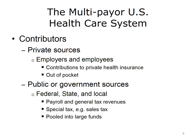Private sources include employers who purchase insurance policies or pay directly for health care expenditures through a self-insured plan. Individuals and families contribute through the employee portion of health insurance premiums and through out-of-pocket expenses. Federal, state, and local governments collect payroll taxes from employers and employees, and general tax revenue that are used to fund government-financed insurance. Occasionally, special tax methods are used, such as a sales tax. The money contributed from government and private sources is pooled into larger funds and distributed by payers.